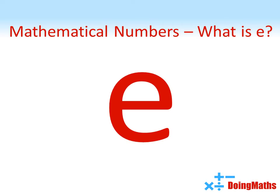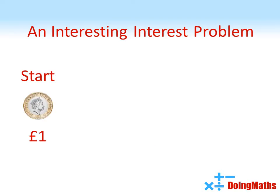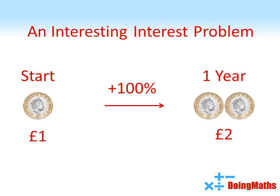Mathematical numbers. What is e? To find e, we're going to look at a particular problem to do with interest on a savings account. Suppose you've managed to find a savings account with an amazing 100% interest per year. So you start off with one pound in your account, at the end of the year you'll get a hundred percent interest, so that's another pound and you'll end up with two pounds.